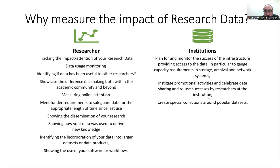At an institutional level, you can also use tracking of the impact of research data from a planning point of view — the success of the infrastructure providing access to it, for example, to gauge capacity requirements and storage, archival and network systems. If your institution has a data repository, you can look at the metrics to see if it's suitable. You can also use it for promotional activities and celebrate data sharing and reuse successes by researchers at the institution, and you can create special collections around popular datasets.